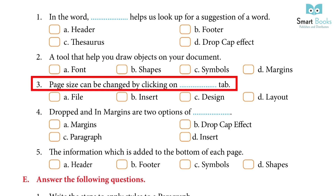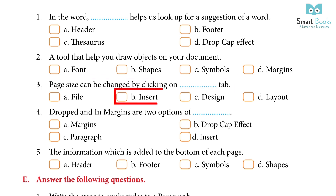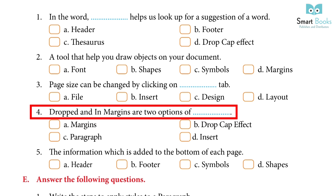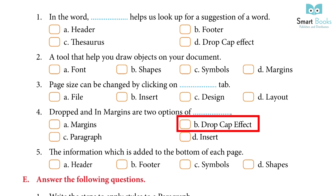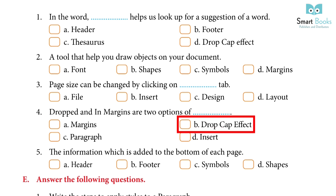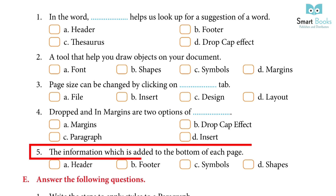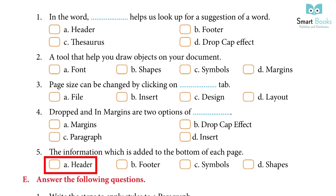4. Dropped and In Margins are two options of —. Options: Margins, Drop Cap Effect, Paragraph, Insert. Answer: Drop Cap Effect. 5. The information which is added to the bottom of each page. Options: Header, Footer, Symbols, Shapes. Answer: Footer.